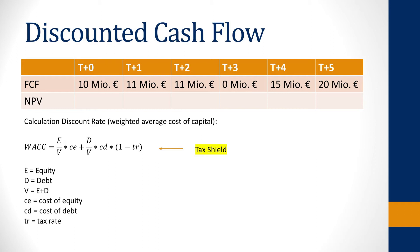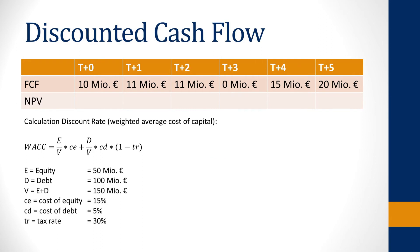The Weighted Average Cost of Capital is the sum of: the share of equity to total assets multiplied by the cost of equity, plus the share of debt to total assets multiplied by the cost of debt. The cost of debt is the interest the company pays on its debt. The tax shield is very important here, since interest paid on debt can be deducted from taxes, making debt relatively cheaper. To account for this, we adjust the cost of debt by multiplying it by one minus the tax rate. Using the company's numbers — 50 million equity, 100 million debt, cost of equity 15%, cost of debt 5%, and a corporate tax rate of 30% — the discount rate is 7.333 percent.